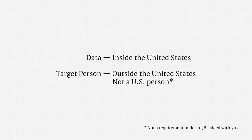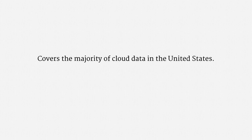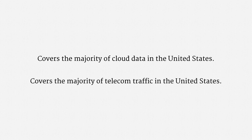It turns out that the majority of data stored with American cloud services belongs to foreigners. And the majority of telecommunications traffic in the United States, other than streaming video and file sharing, is associated with a foreign user or business. That means Section 702 covers the majority of cloud data in the United States, and also covers the majority of telecommunications traffic, including internet traffic and phone calls. This is an extremely broad surveillance authority.